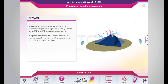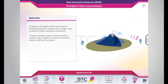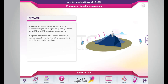A repeater is the simplest and the least expensive internetworking device. It copies every message it hears on LAN number 1 to LAN number 2, sometimes unnecessarily. A repeater operates at level 1 of the OSI model. It receives a signal, amplifies it, and then retransmits it along the next leg of the medium.